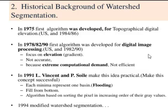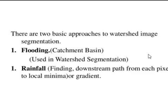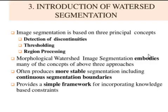More variations were made day by day, and in 1994 the most developed watershed segmentation algorithm was developed. There are two different techniques to learn this watershed in image processing: first is flooding, that is catchment area, and second is rainfall. In rainfall we find the downstream path from each pixel to local minima.